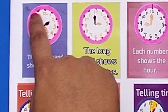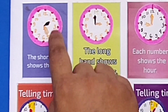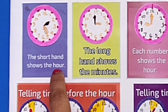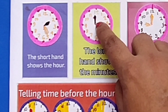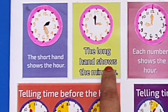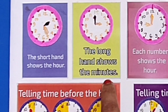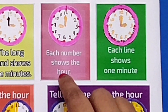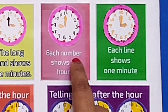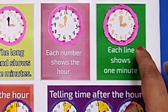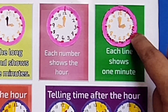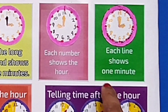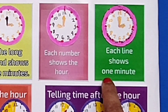In this clock I have highlighted the short hand — the short hand shows the hour. Here the long hand is highlighted — the long hand shows the minutes. Here I have highlighted the numbers; each number shows the hour. In this clock the lines are highlighted; each line shows 1 minute.